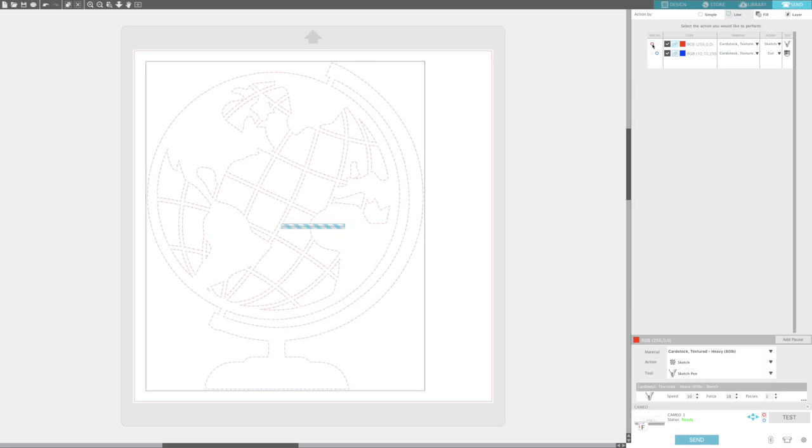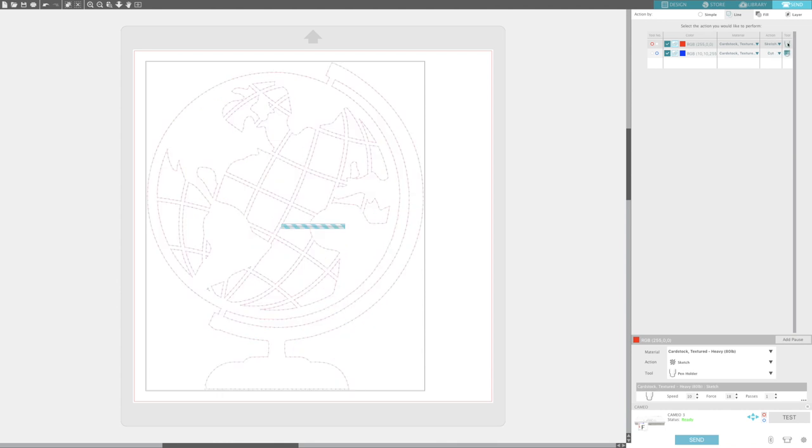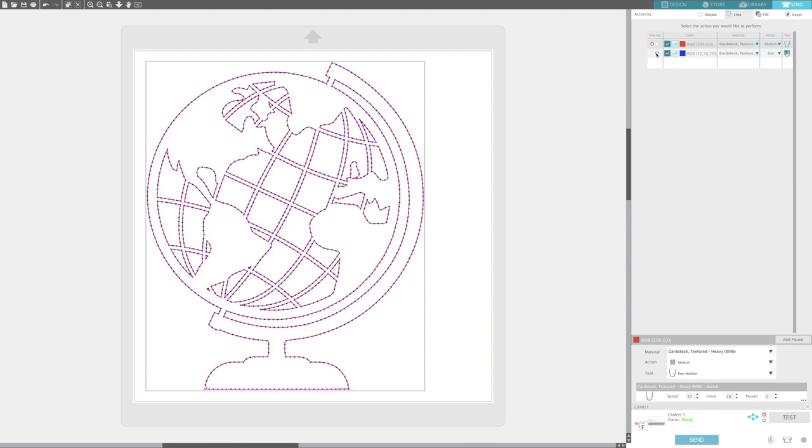And click on send and you will see that the red line is going to sketch the design. I'm using cardstock textured and it's going to use a sketch pen or a pen holder. In this instance, I'm going to use the pen holder, so I'm going to click on that option. And then the second pass, it's going to cut. So that's with the blue circle, the blue tool, it's going to cut. Make sure you have the ratchet blade selected.